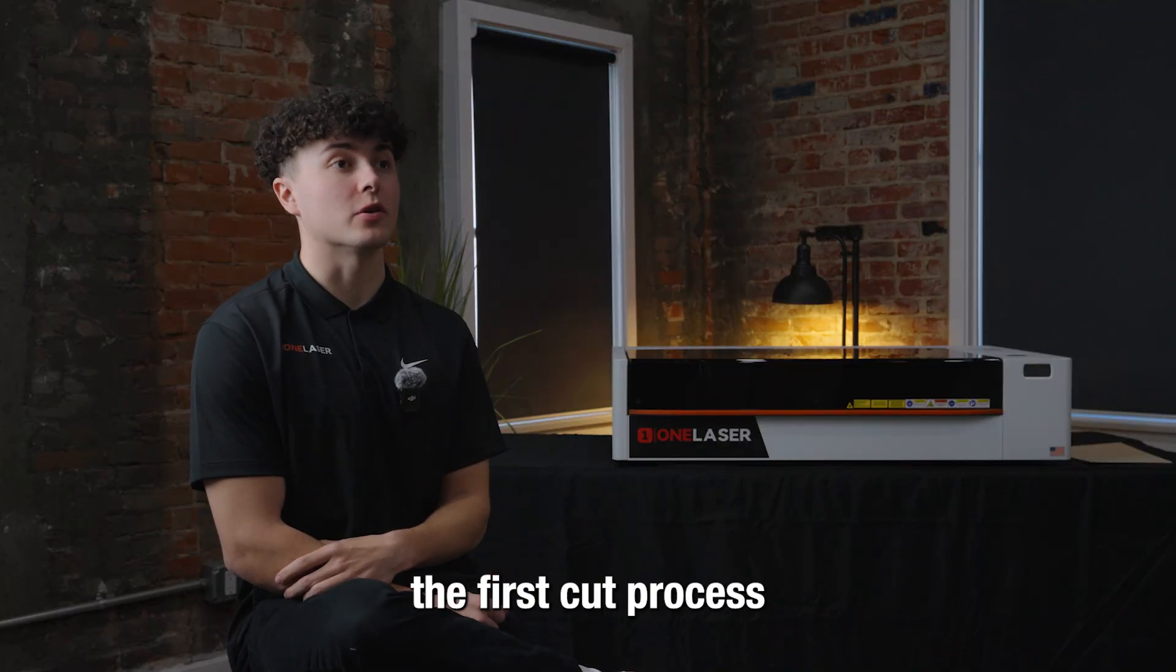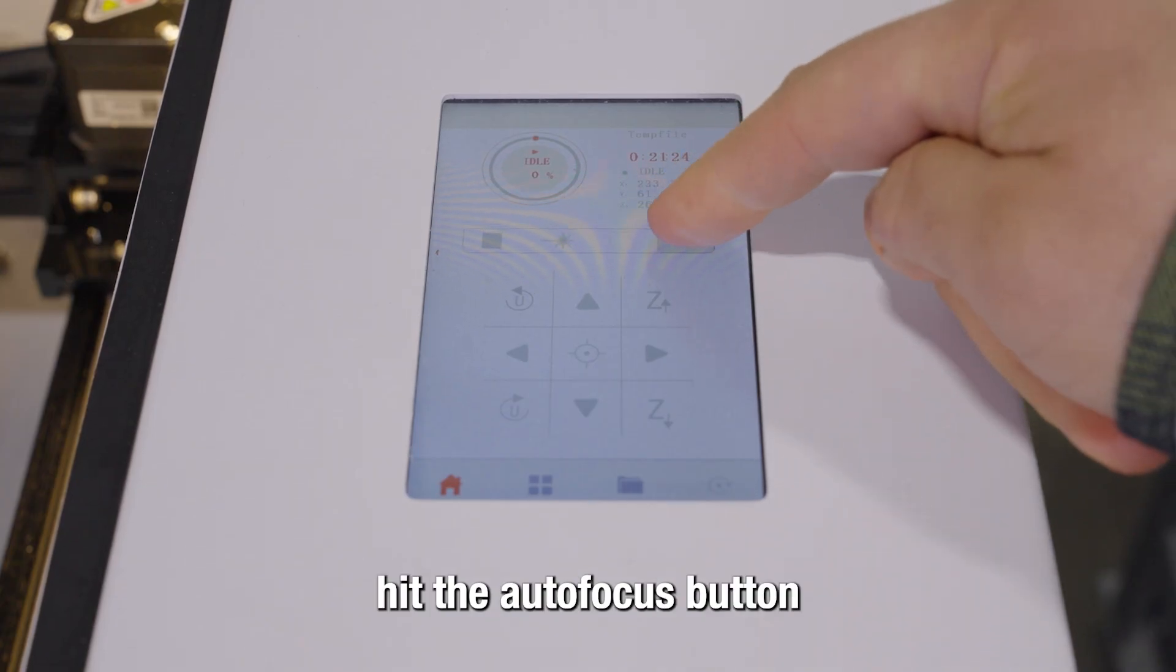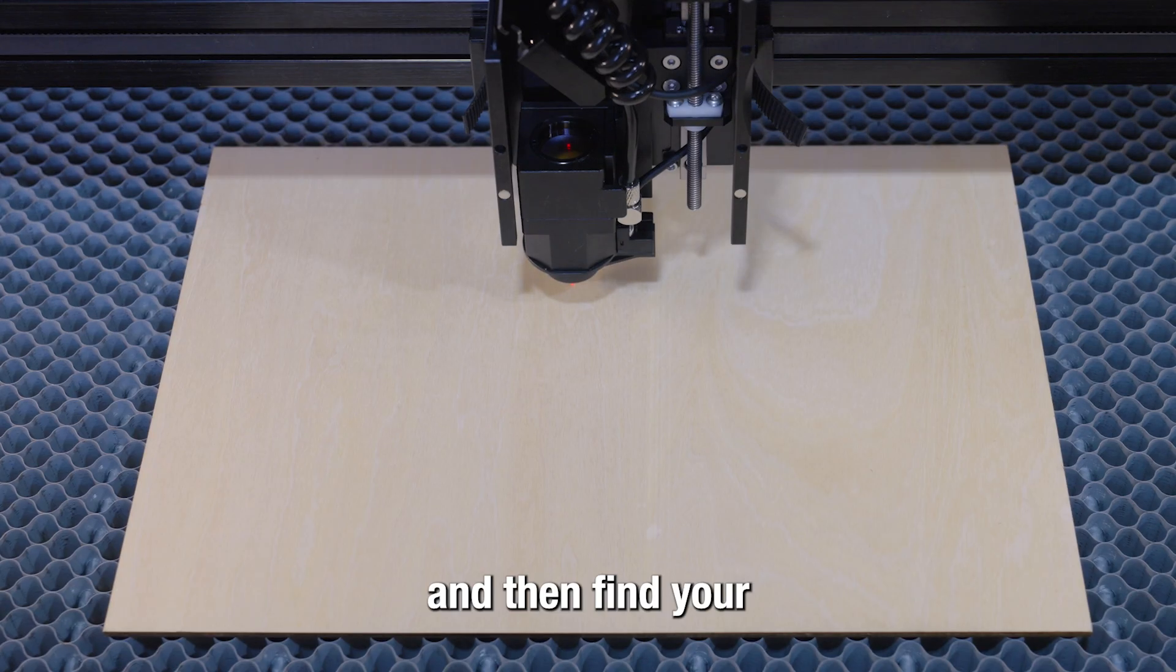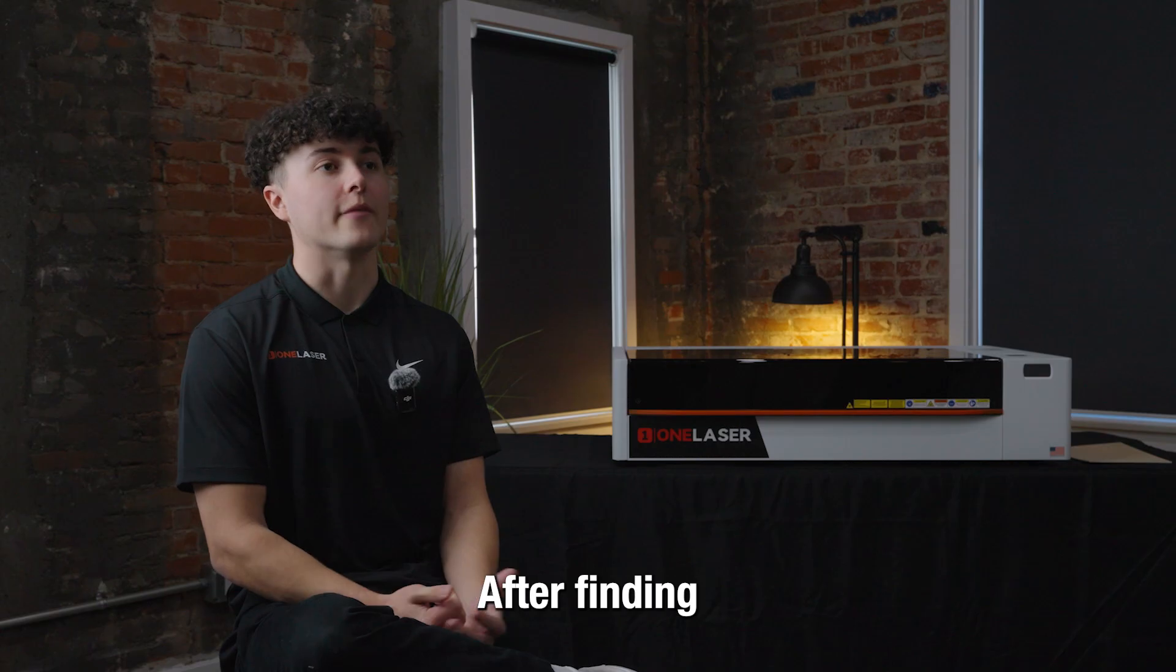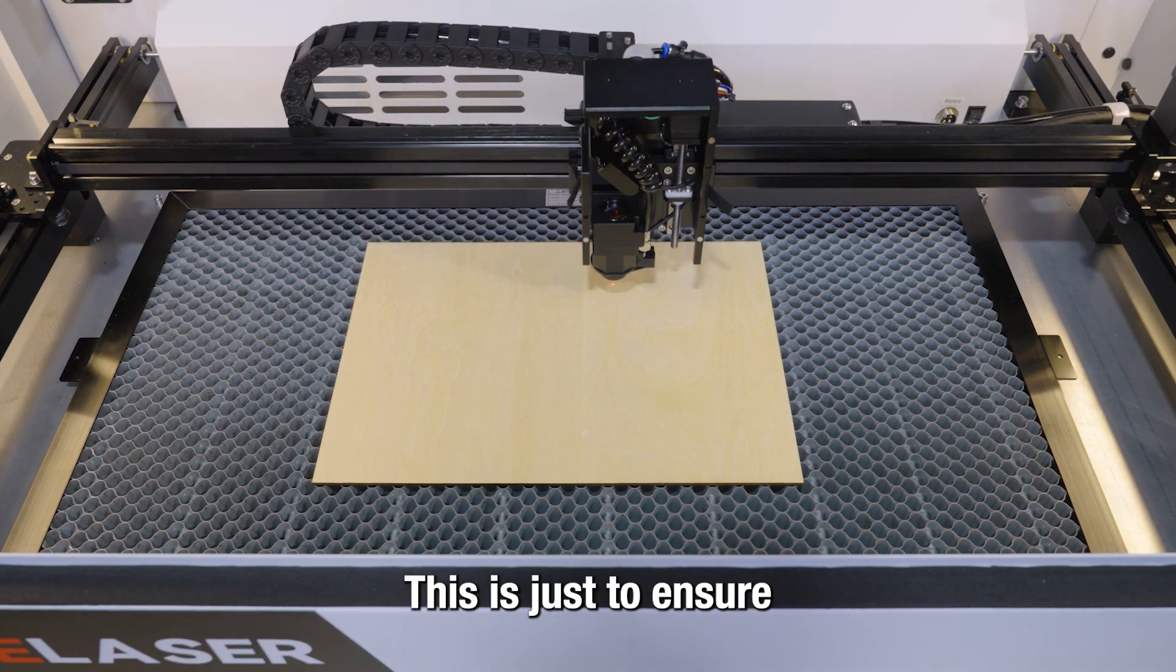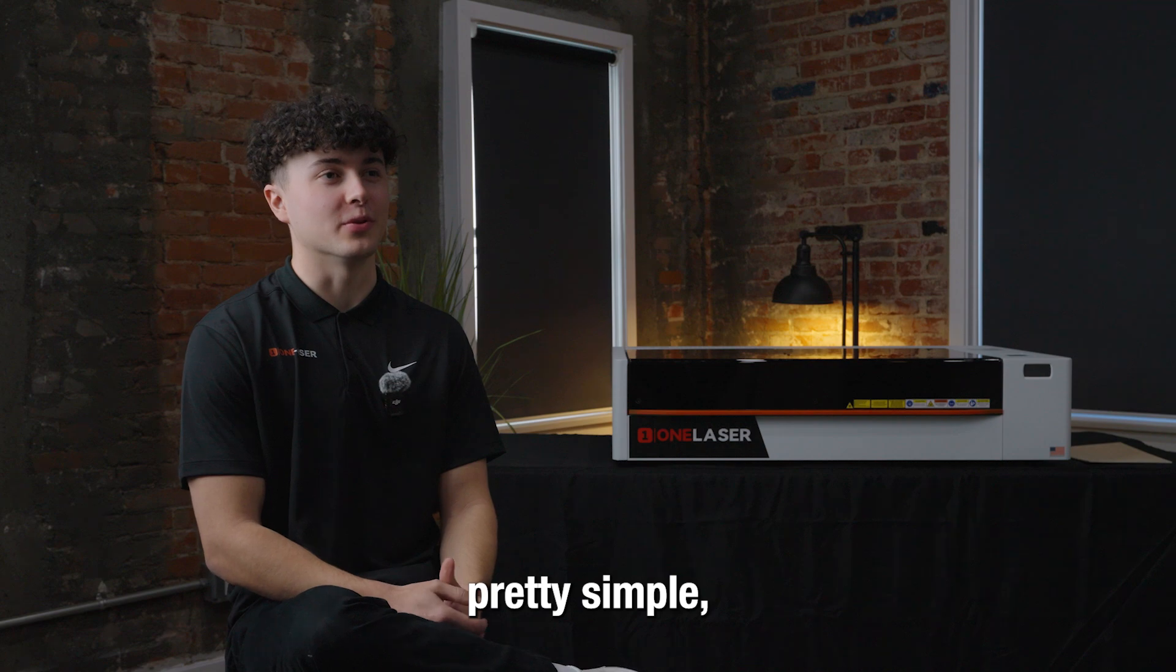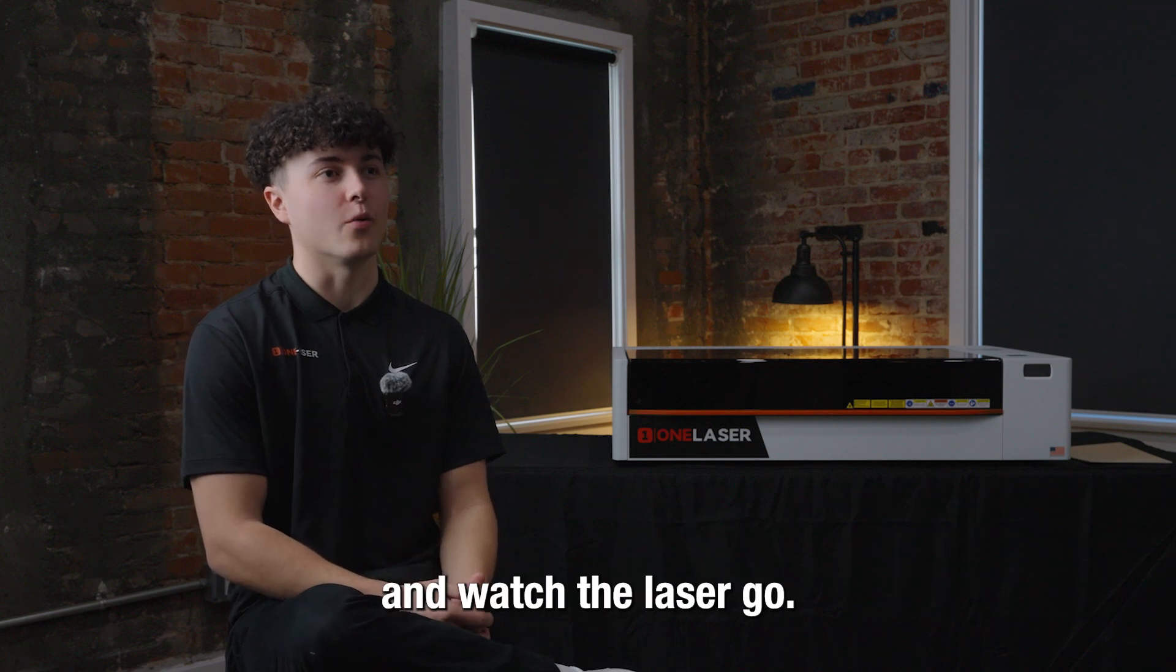The next step in the first cut process is to jog the machine over the material, hit the autofocus button, and find your desired home location. After finding your home position, hit the Frame button to ensure your design stays on the material. The last step is simple: hit the Start button and watch the laser go.